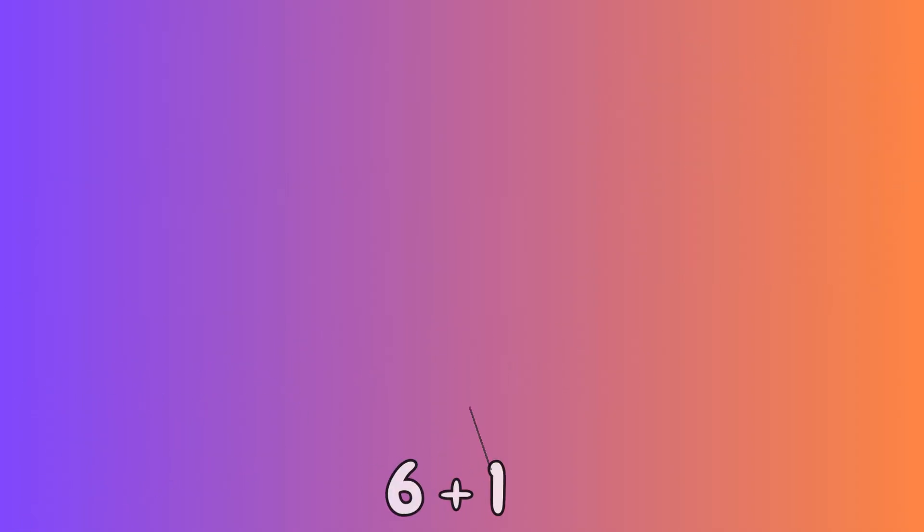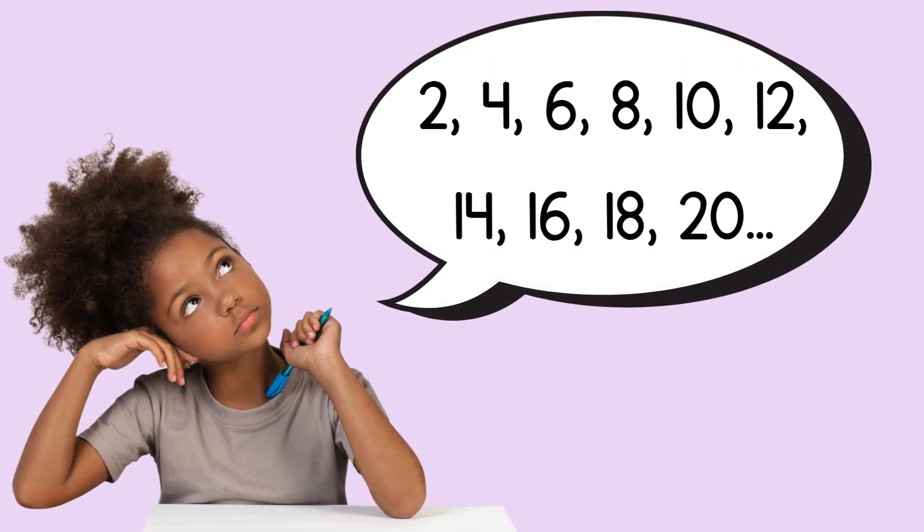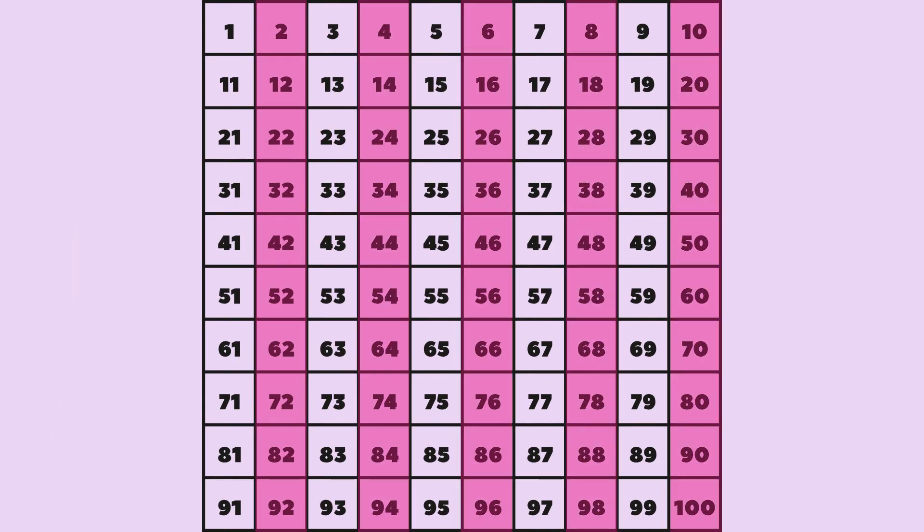I bet you know your doubles. One plus one is two and on and on. If you know how to skip count by twos, then you know the answers to doubles facts. They're all even numbers.